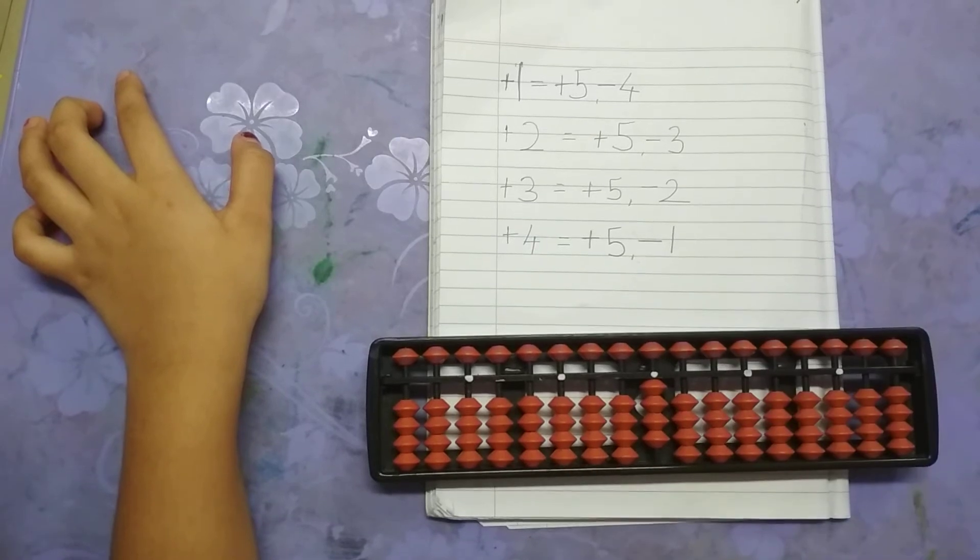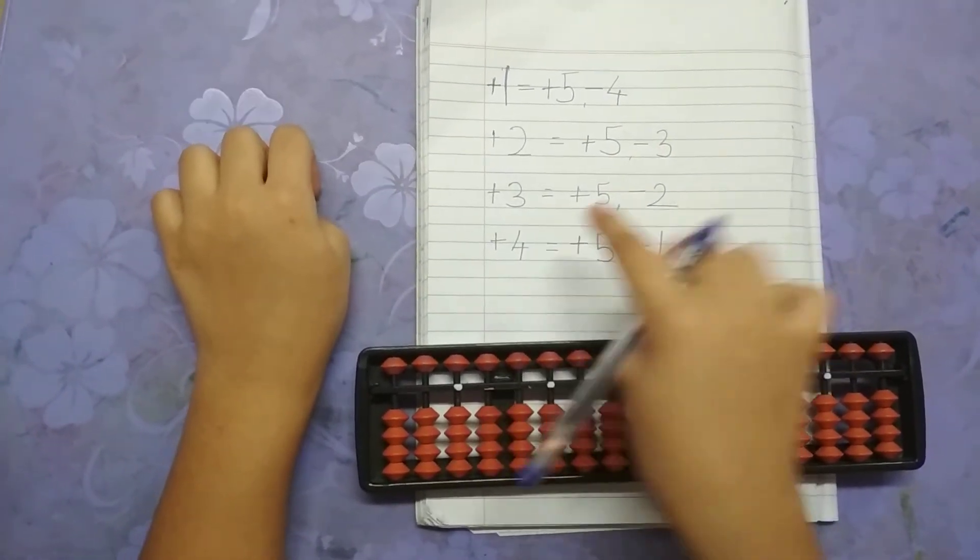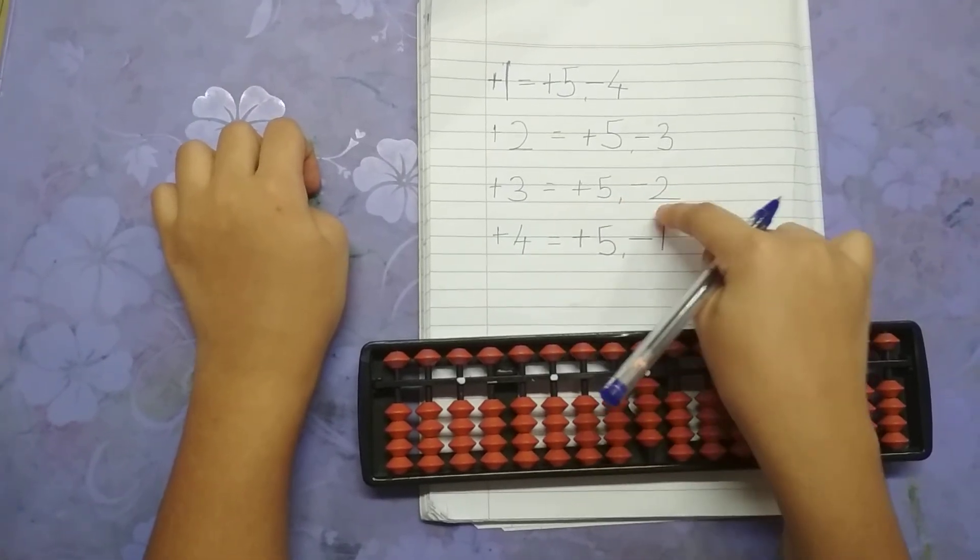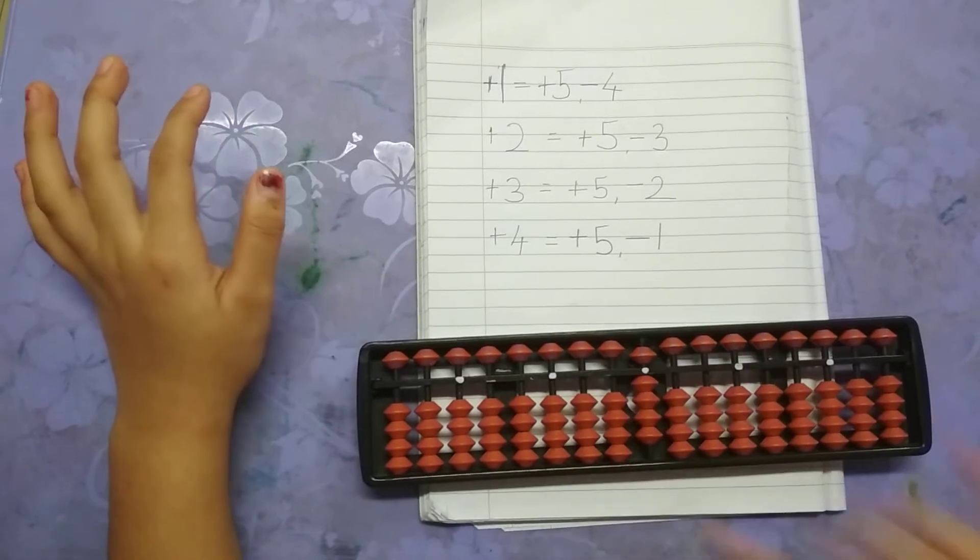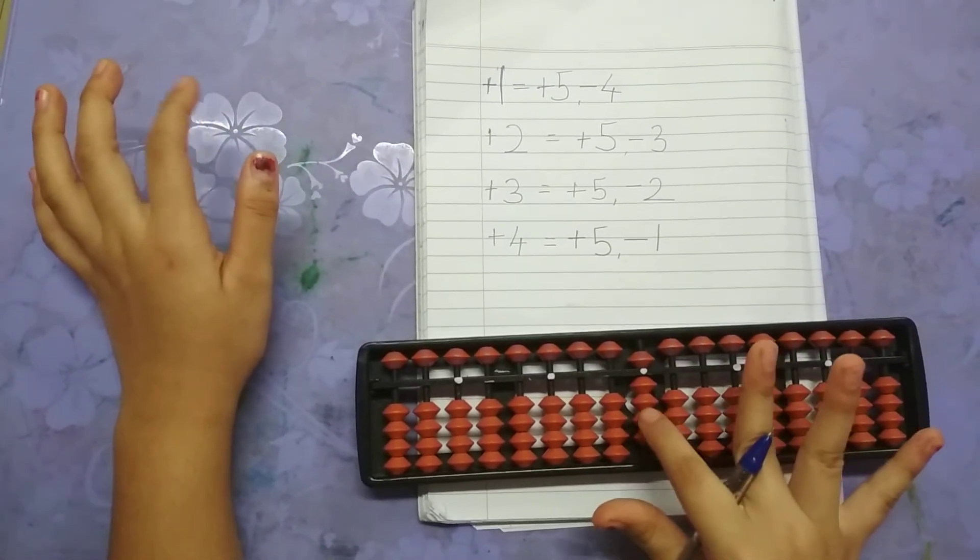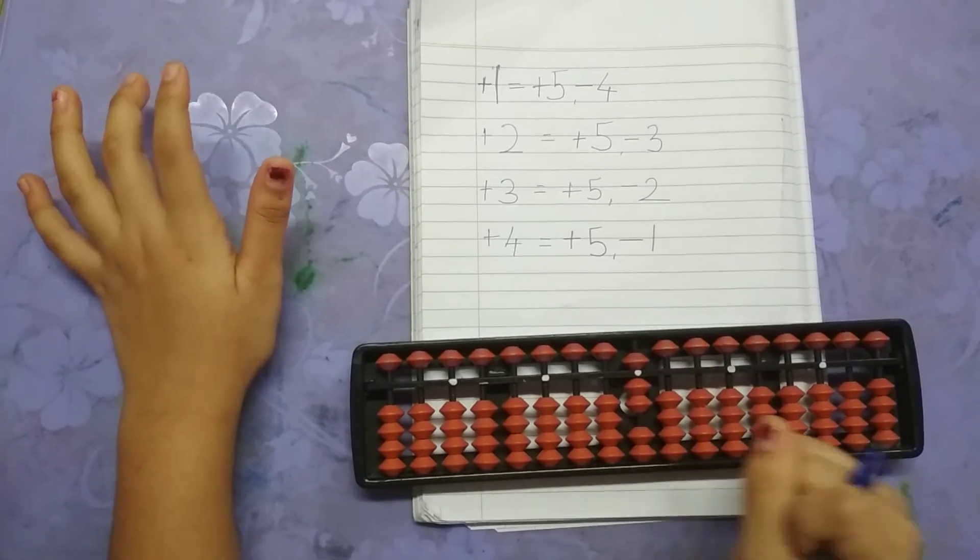Okay. We have to add 3. The formula for 3 is plus 5 minus 2. So 3 plus 4 equals 7. This is 7.